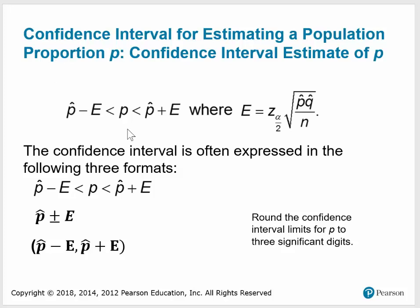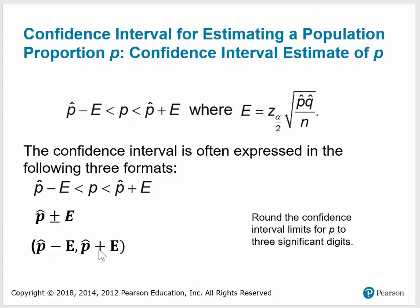We have a couple of versions for the interval. One is written as a double inequality where the sample proportion minus the margin of error is less than P, which is less than the sample proportion plus the margin of error, where the margin of error is found by multiplying the critical value times the square root of P-hat times Q-hat divided by N. The three formats in which you will potentially write the interval include that form, plus P-hat plus or minus the margin of error, and the interval written as the difference separated from the sum.